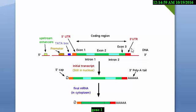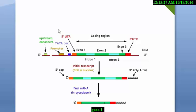There is a 5' end and a 3' end of a DNA. In the upstream region we find the enhancer, promoter, and TATA box. Now first we have to know what is the upstream and what is the downstream of a gene — why it is called upstream and why it is called downstream.